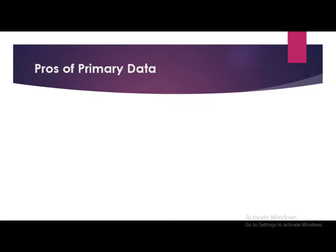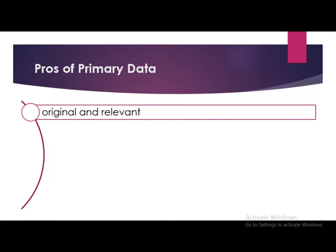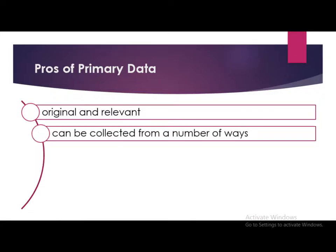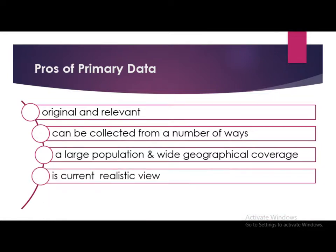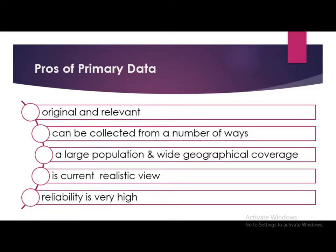The advantages of primary data are: it is original and relevant to the topic of research, and the degree of accuracy is very high. Primary data can be collected in a number of ways — interviews, telephone surveys, focus groups, etc. Common sources include surveys, observations, experiments, questionnaires, and personal interviews. It can be collected across national borders through email and post, and can include a large population with wider geographical coverage. Primary data is current and can give a realistic view of the topic under consideration. Reliability is very high because it is collected by concerned and reliable parties.